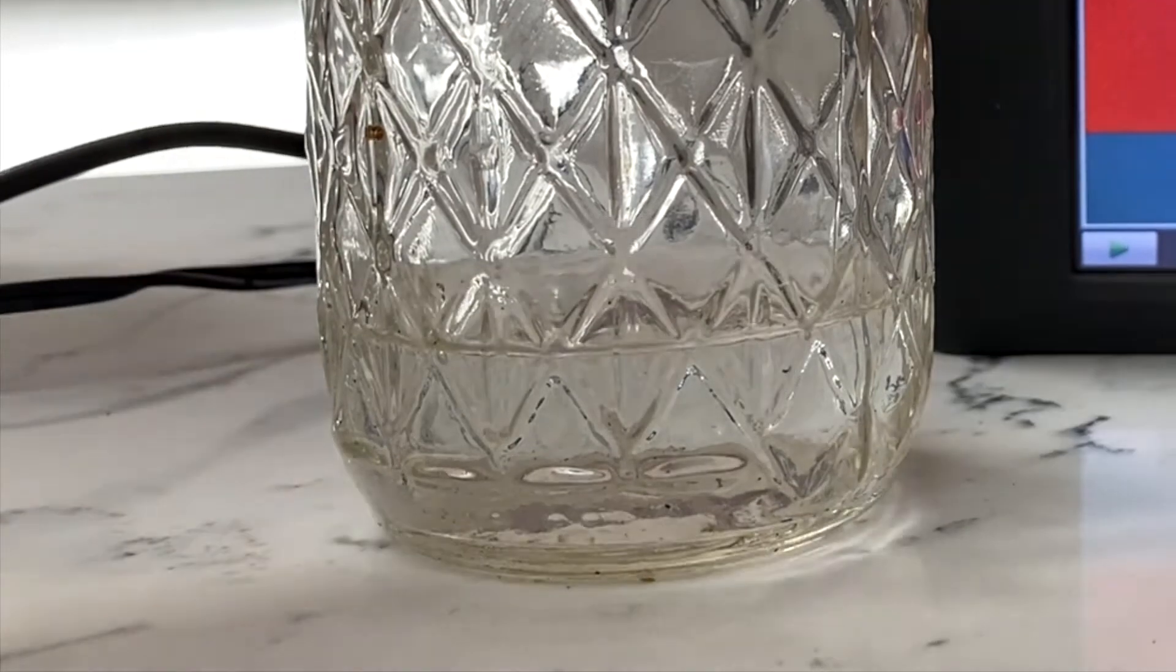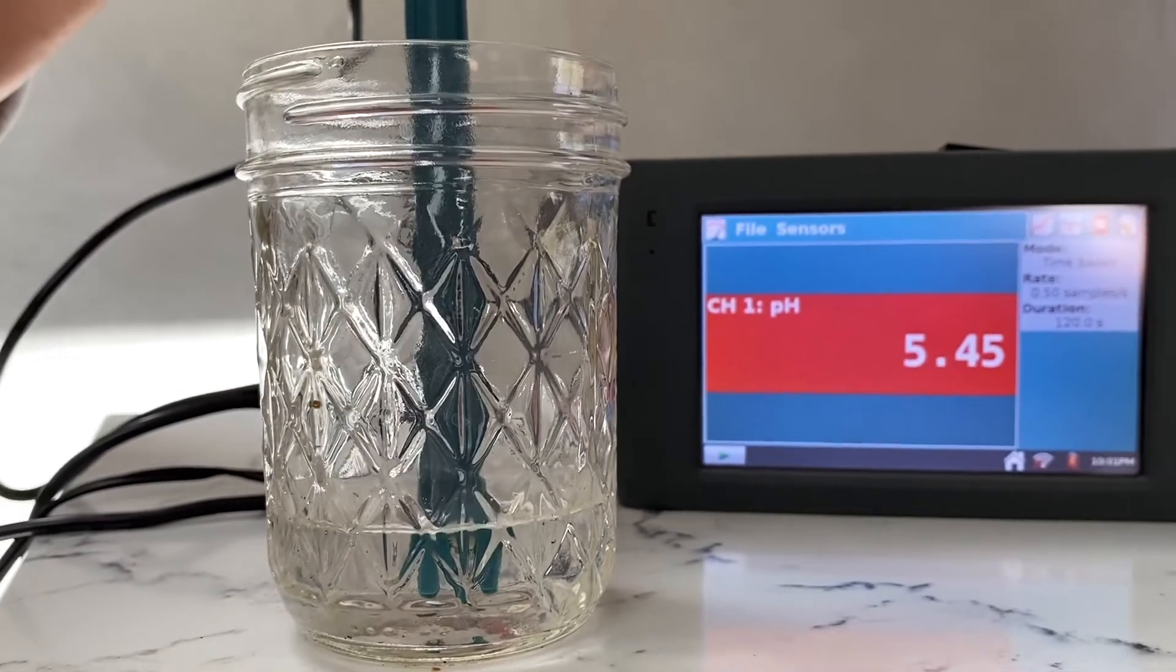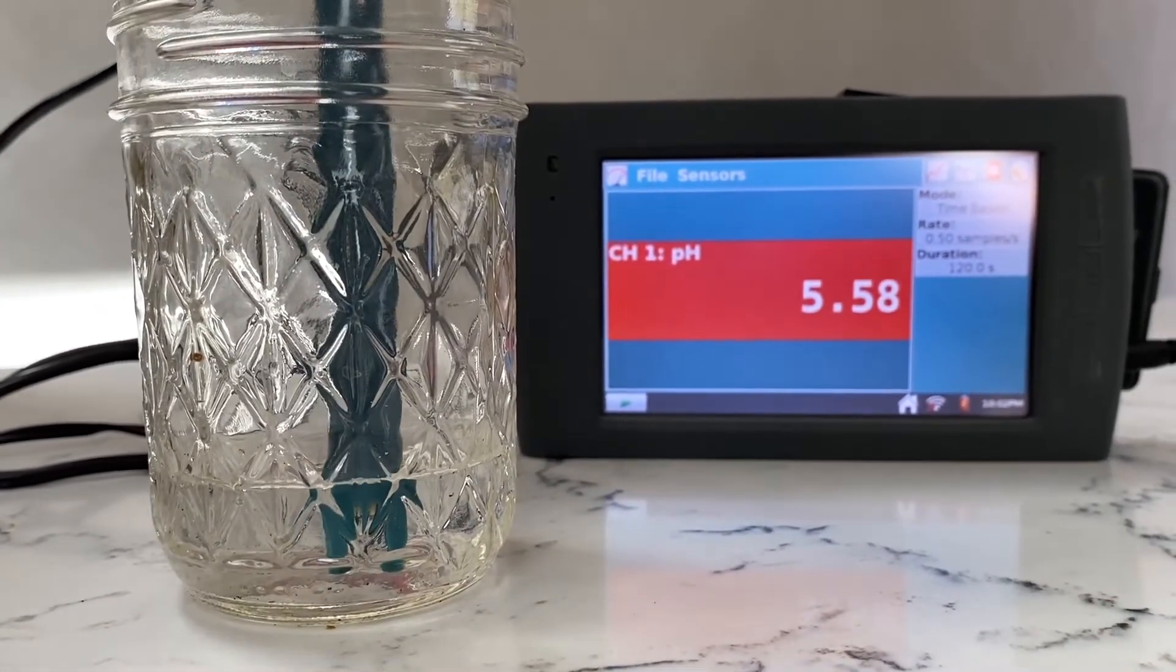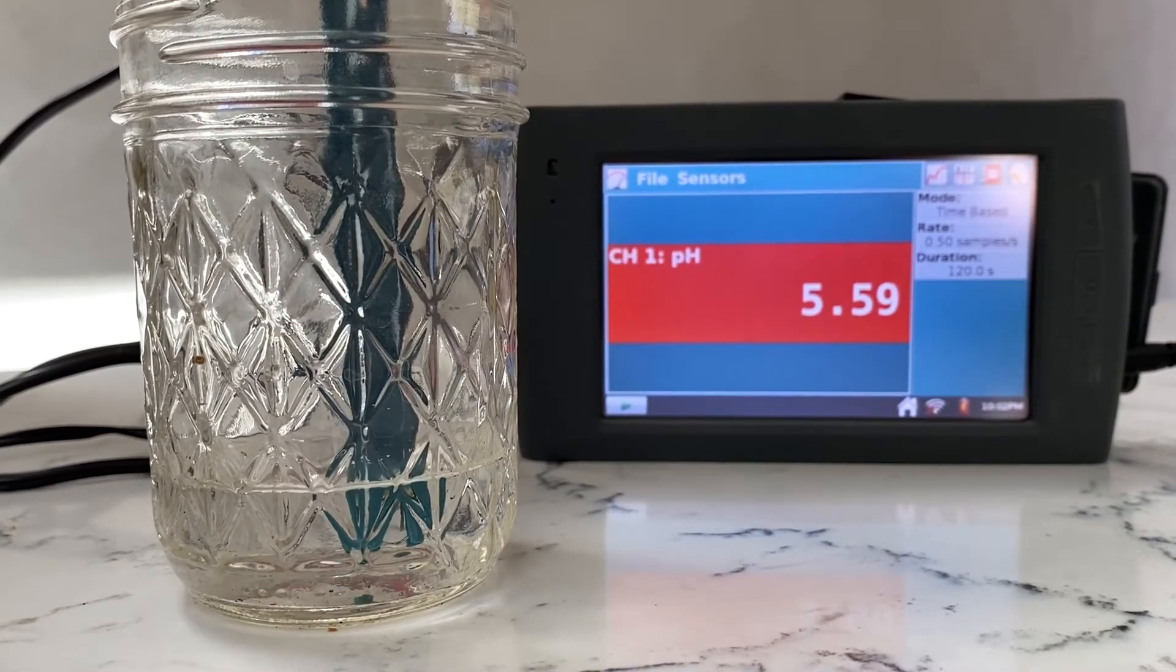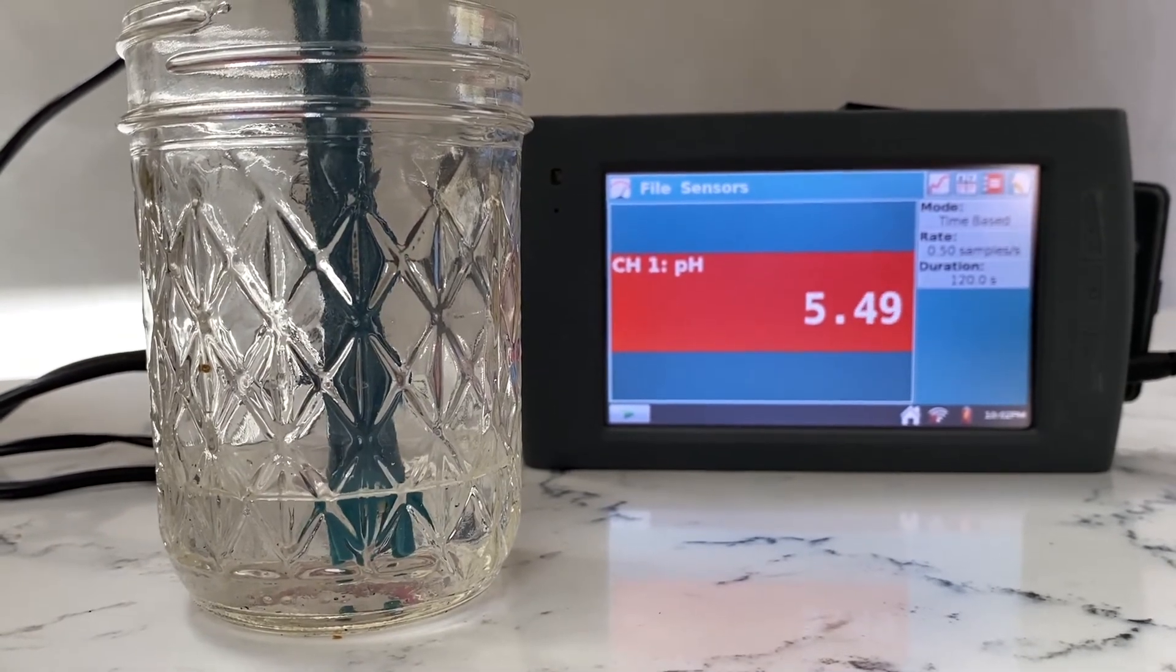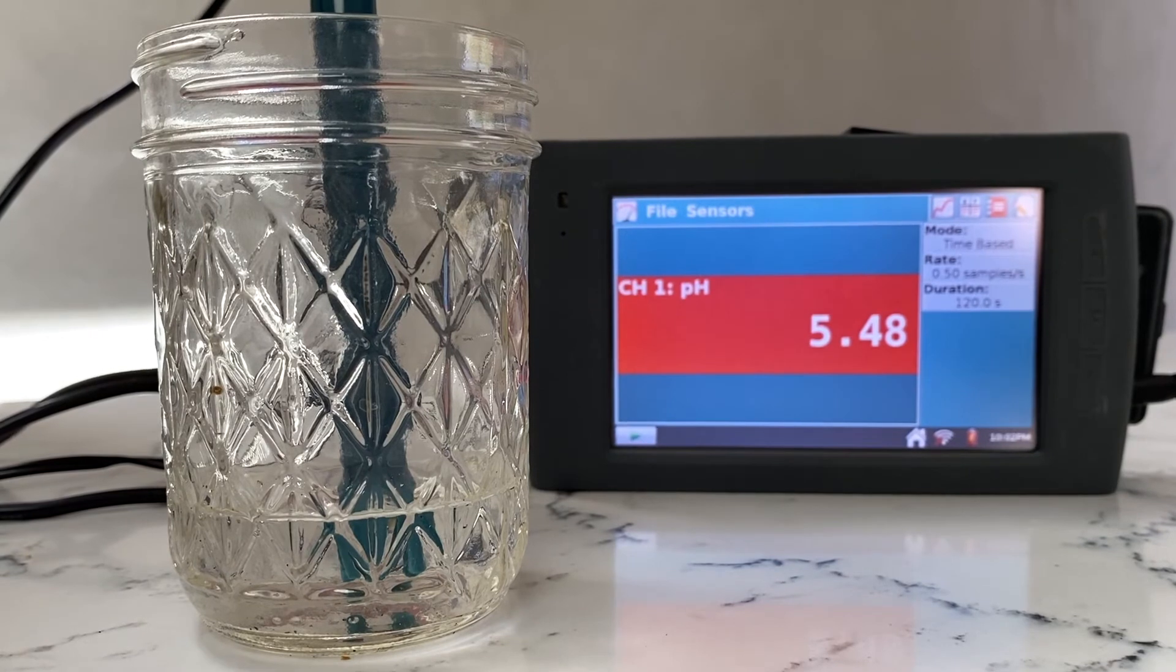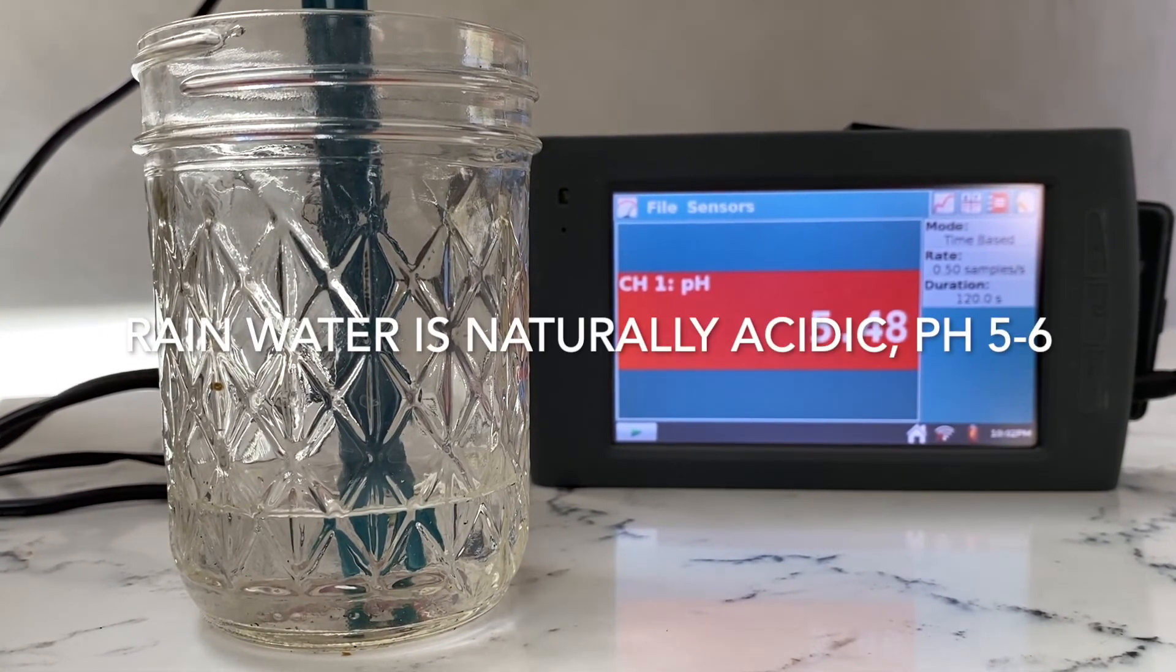I collected some rainwater when it rained last week. Let's wait for this to equilibrate. This is the pH of rainwater collected in Los Angeles in the week of April 10th. Let's see what we get. So this is not a pH of seven—basically between a pH of five and six. Rainwater is naturally acidic.